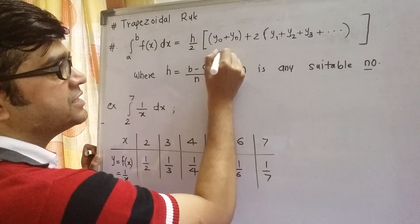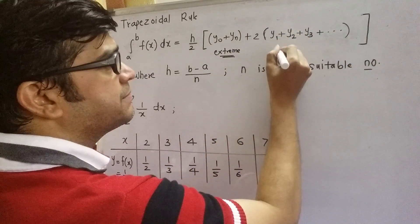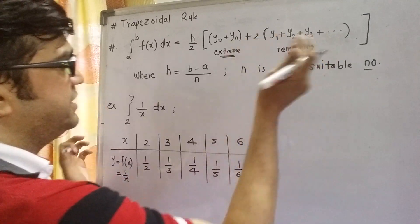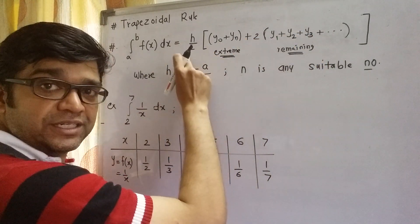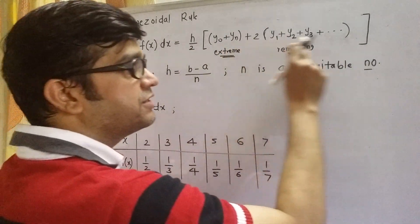This y0 and yn, these are called extreme ordinates, and remaining y1, y2, y3, these are all remaining ordinates. So the formula becomes h by 2 times sum of extreme ordinates plus 2 times remaining ordinates.